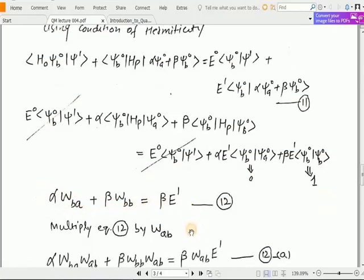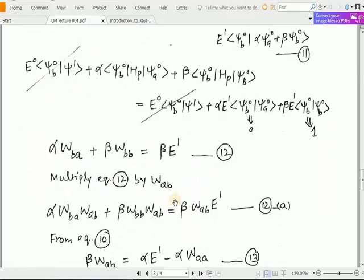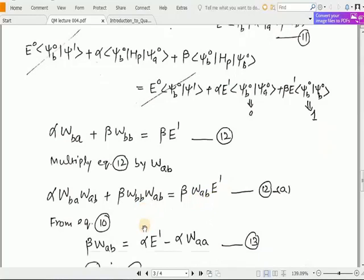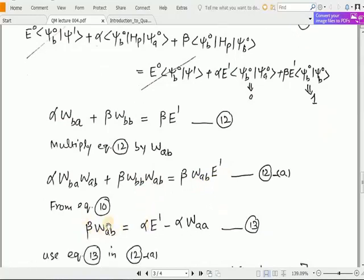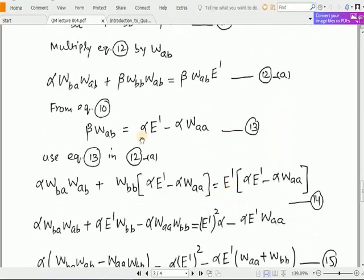Use the condition of hermiticity, simplify the equations, cut the terms on both sides and we will get this form of αW_ba + βW_bb = βE^1. Now multiply this equation 12 with W_ab on both sides, so we will get αW_ba W_ab + βW_bb W_ab = βW_ab E^1. Now replace the value of βW_ab from equation number 10 in equation 12a.